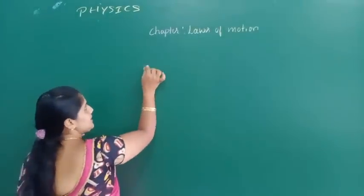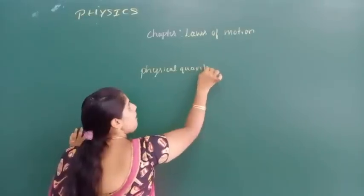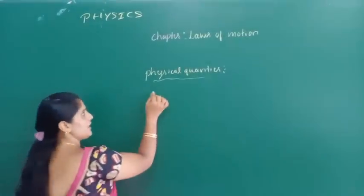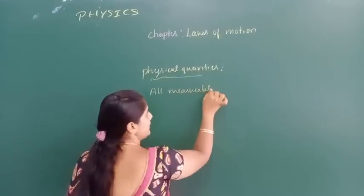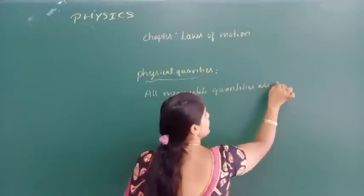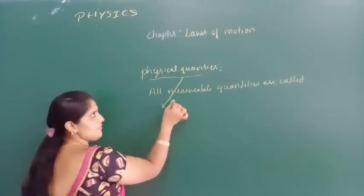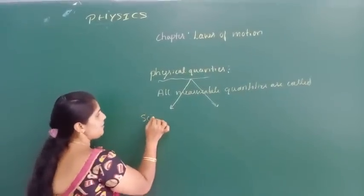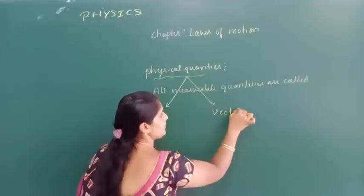What are physical quantities? All measurable quantities are called physical quantities. These physical quantities can be classified into two groups. They are scalars and vectors.